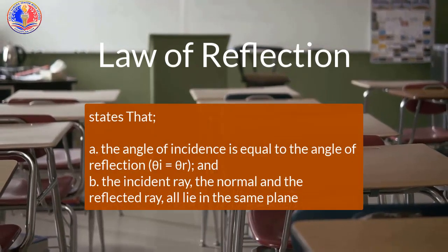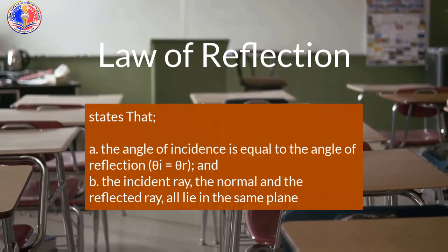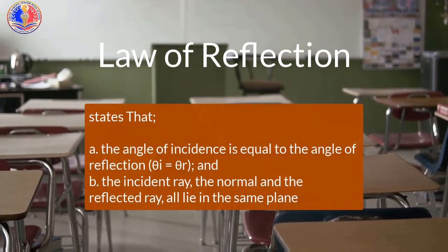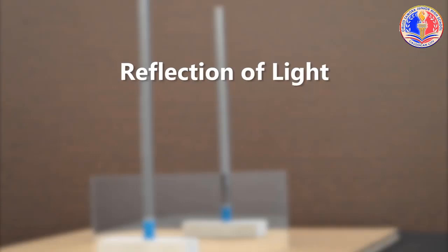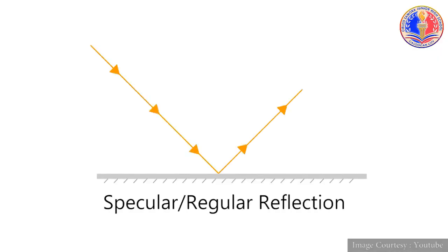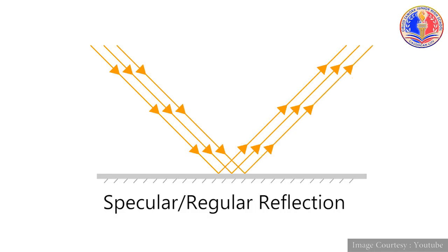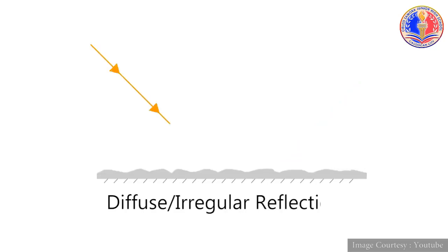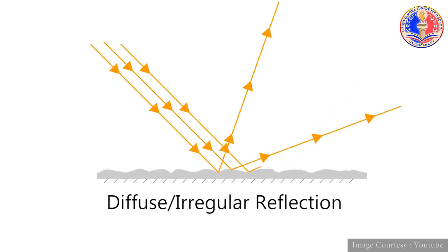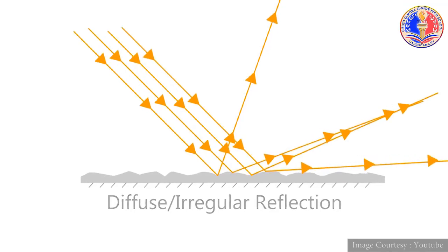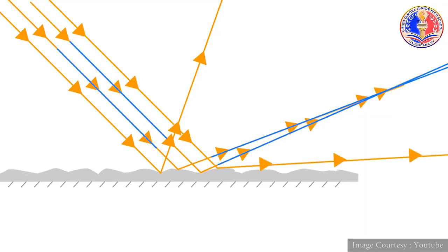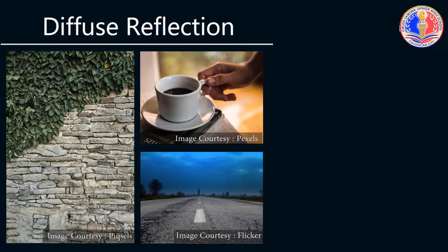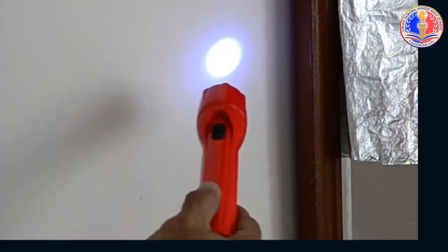Laws of reflection states that the angle of incidence is equal to the angle of reflection, and the incident ray, the normal and reflected ray all lie in the same plane. The reflection of light can be categorized by two types. Specular or regular reflection is defined as the light reflected on a smooth surface at a definite angle. Diffuse or irregular reflection is produced by a rough surface that tends to reflect light in all directions.